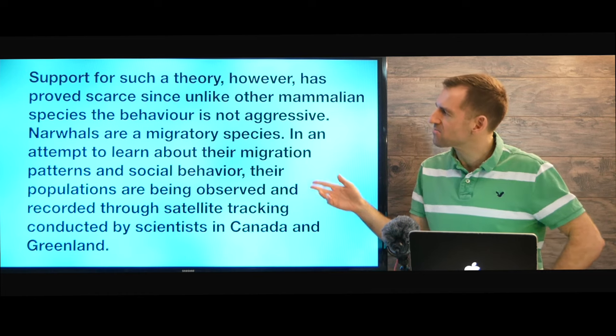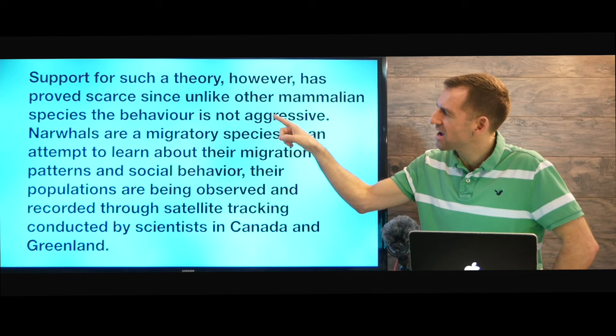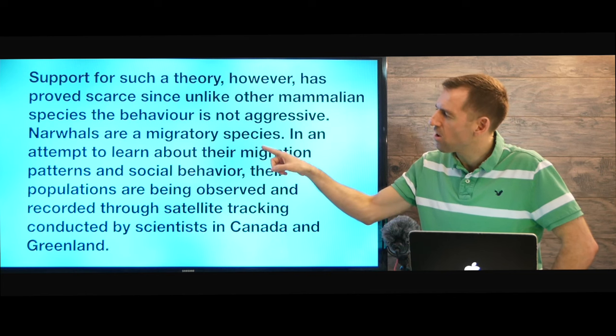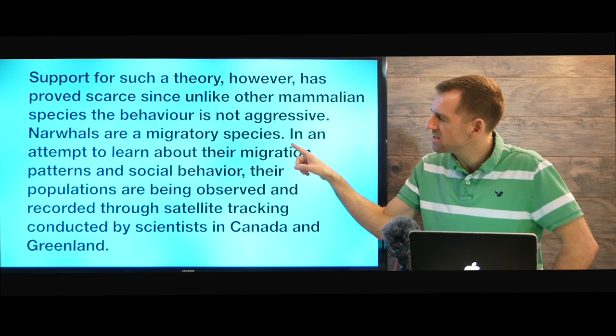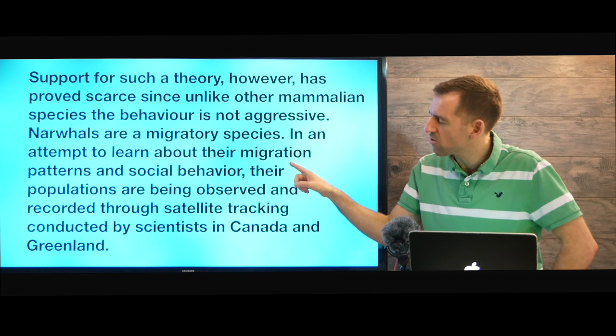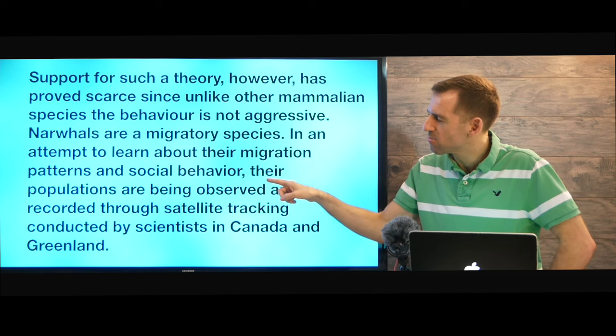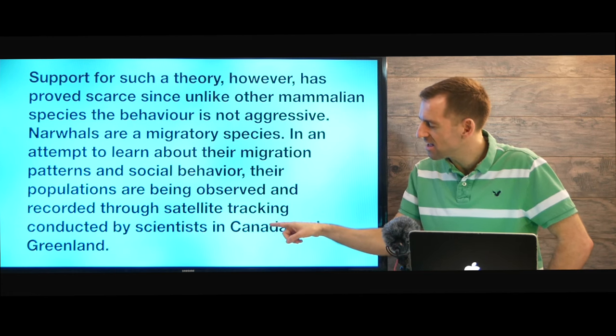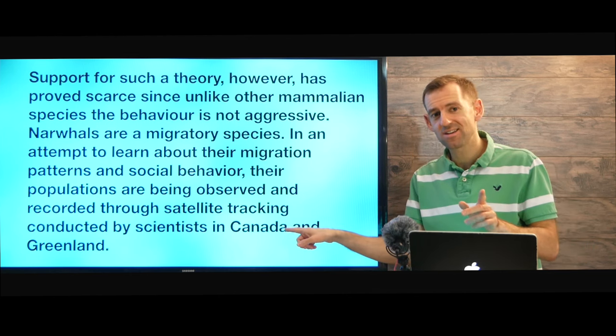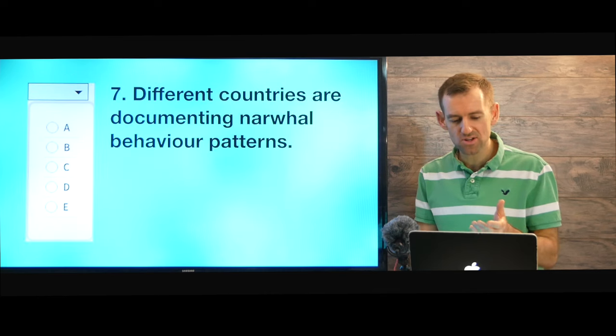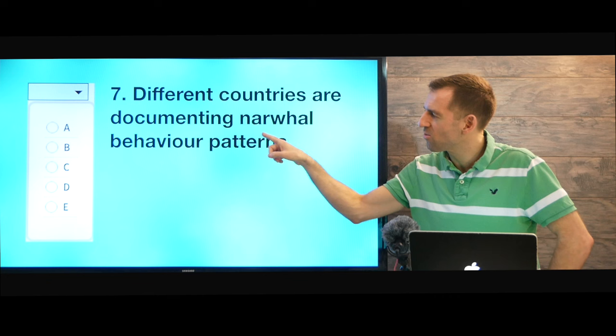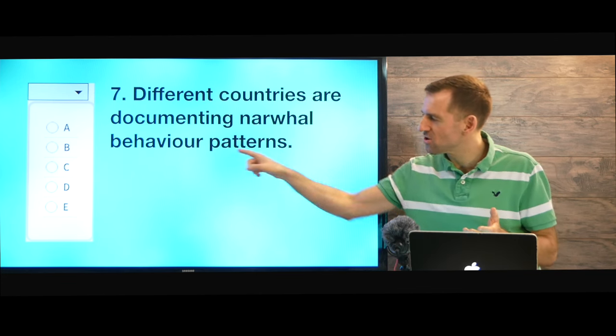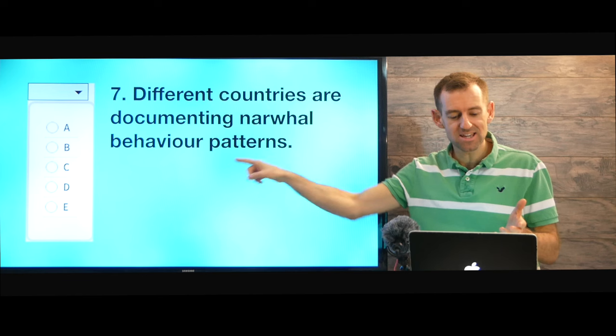Okay let's keep reading. Support for such a theory however has proved scarce since unlike other mammalian species the behavior is not aggressive. Narwhals are a migratory species. In an attempt to learn about their migration patterns and social behavior their populations are being observed and recorded through satellite tracking conducted by scientists in Canada and Greenland. Remember we had a question about something international or other countries or something. Yeah different countries are documenting narwhal behavior patterns. Yes Canada and Greenland are both documenting their patterns. So we put paragraph D. Okay are we done?